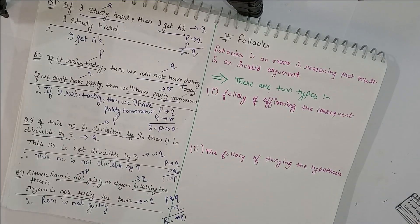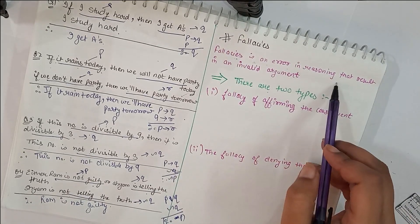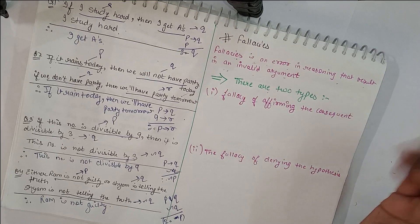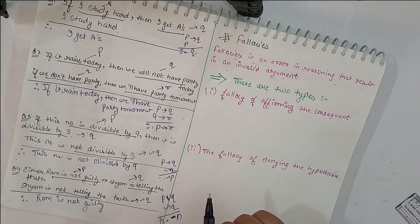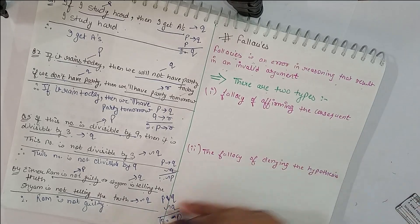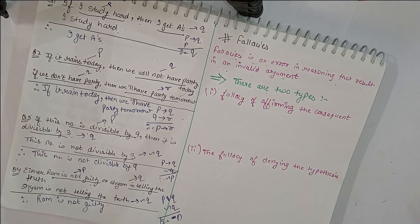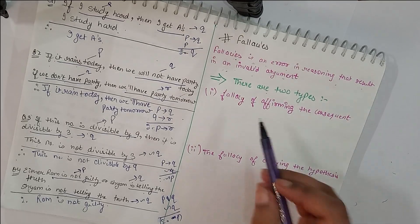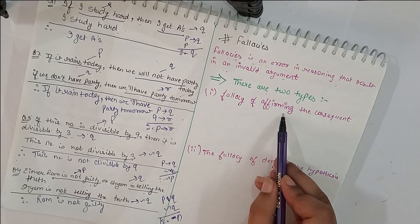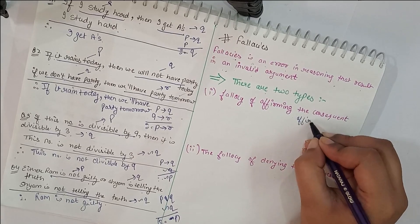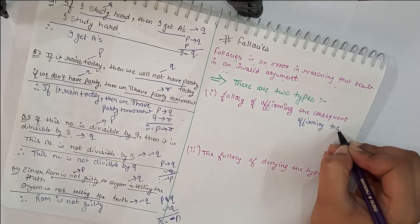These questions were based on valid rules of inference. There are also invalid arguments known as fallacies. A fallacy is an error in reasoning that results in an invalid argument — basically, the errors are called fallacies. They look very similar to rules of inference, so be careful not to get confused. There are two types of fallacies.